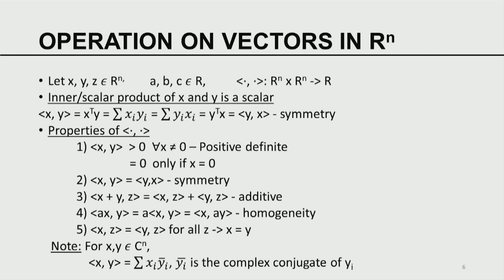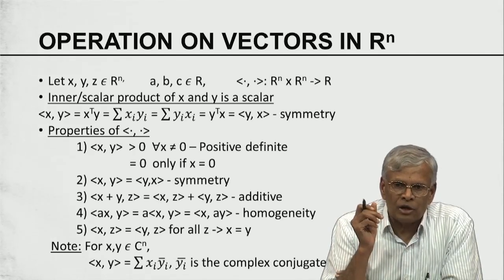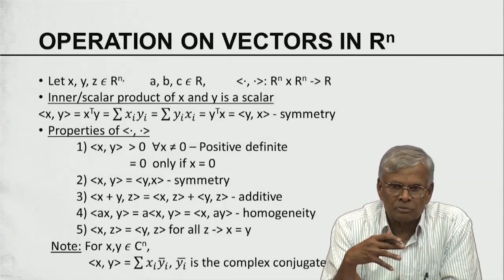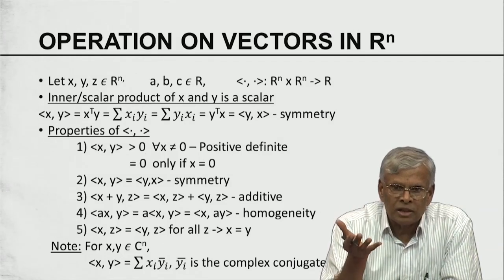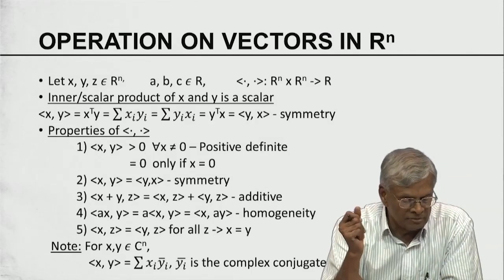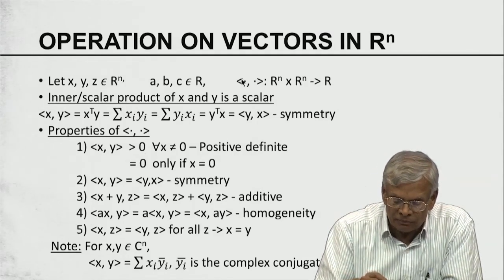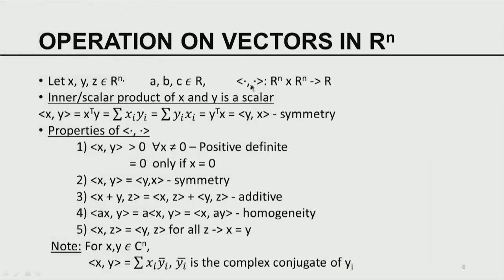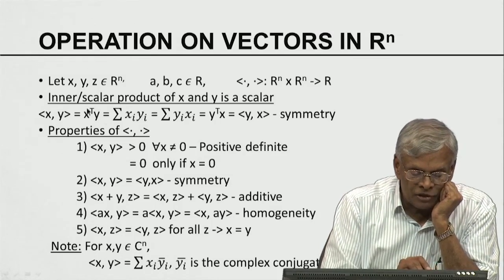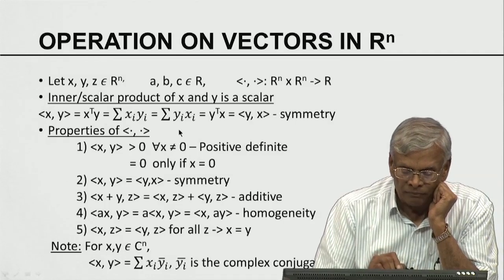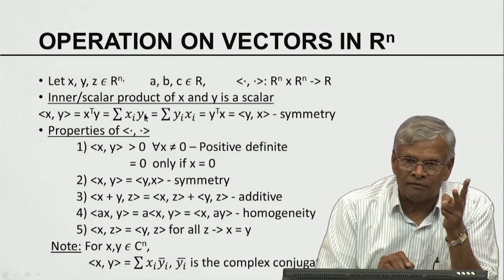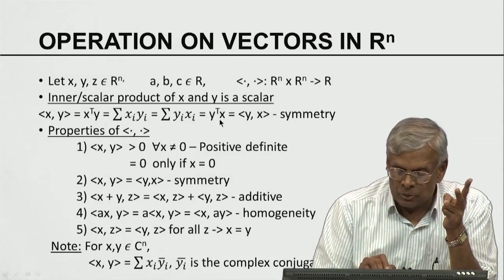I am going to quickly review operations on vectors. Let X, Y, Z be three vectors and A, B be real numbers. I introduce the bracket notation — (·,·) — as a binary operation on vectors called an inner product. The inner product of X and Y is defined as X^T·Y = Σ Xi·Yi. Since multiplication of real numbers is commutative, Xi·Yi = Yi·Xi, so (X,Y) = X^T·Y = Y^T·X = (Y,X), showing the inner product is symmetric.